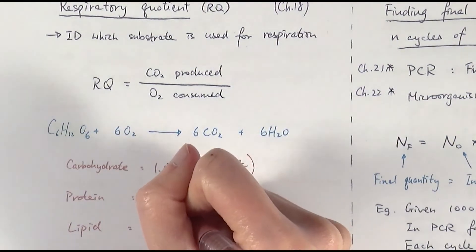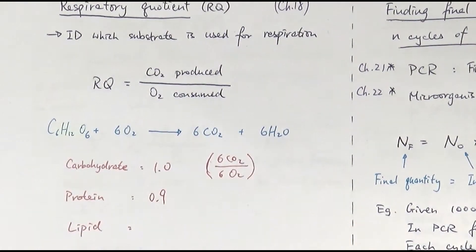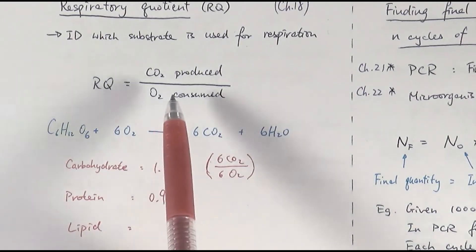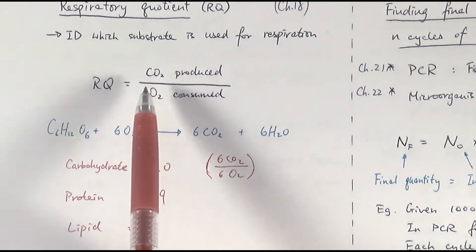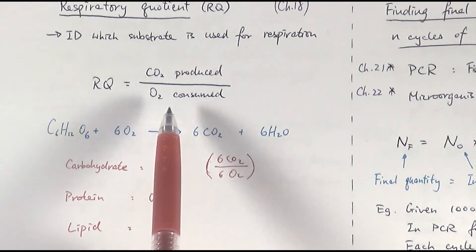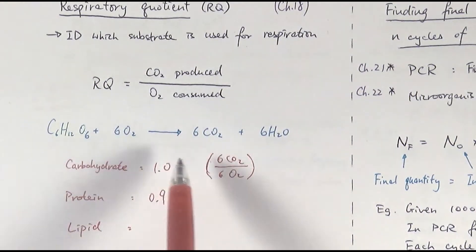For proteins would be 0.9. Without going to details about exactly how proteins are broken down to release energy, let's just accept that it is 0.9. So that would mean that we're either releasing less carbon dioxide, but what might be happening is that we are using up more oxygen to actually do that process. So that's why it's lower than one.